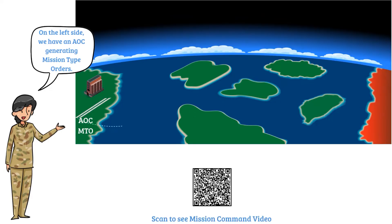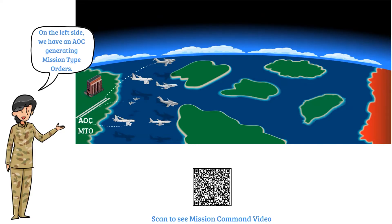Here you can see high-value airborne assets and strategic airlift, both intra- and inter-theater. Logistics serves a critical role in executing ACE. Strike aircraft also flow from home station to forward and enduring locations, or main operating bases.